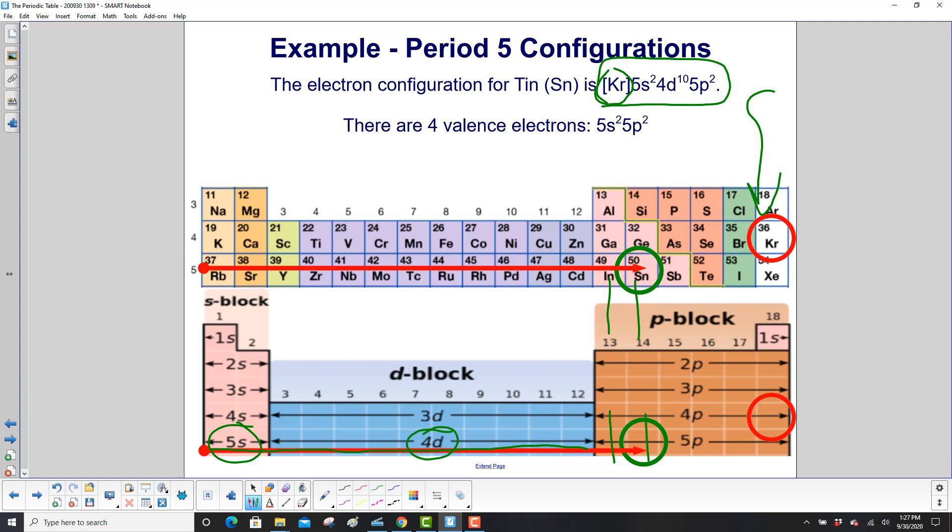So the valence electrons are in the fifth shell, the n equal 5. 4d10, those are not valence electrons. So there are four of them, 2 in 5s and 2 in 5p.